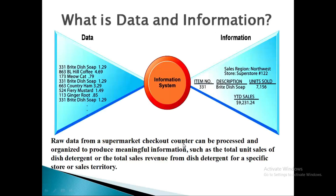Let's see a diagram. For example, meri paas kuch figures hain jisse hum keate hain raw facts. It is written: 331, 863, BL Hill Coffee, 4.69, 331, Bright Dish Soap, 1.29, 524, Fiery Mustard, 1.49 and so on. Yeh sab hai mera data — raw facts and figures, joh kahin se bhi kuch bhi arbitrarily production, sales, aur kisi bhi product ki information — sab hum ne ikattha karke ek jagah rakh diya hai.